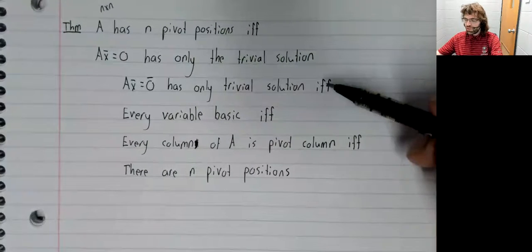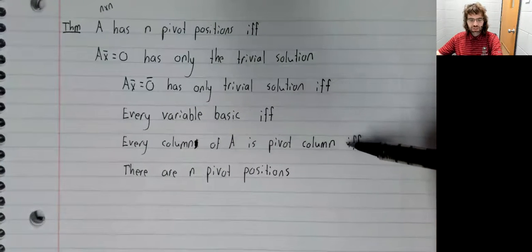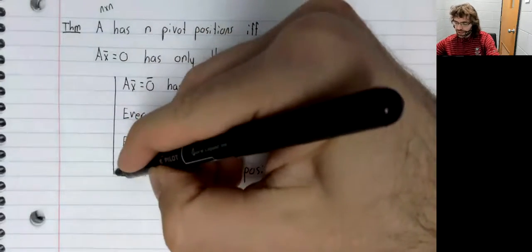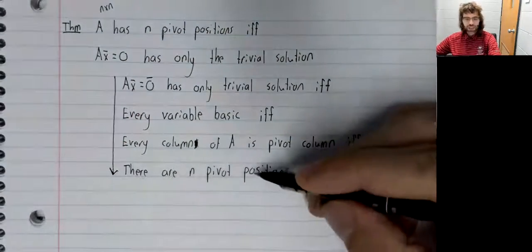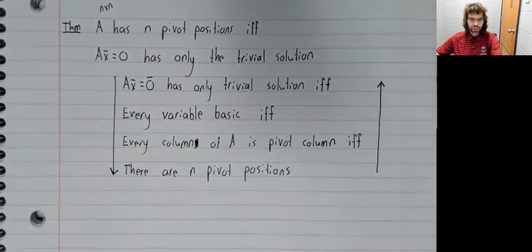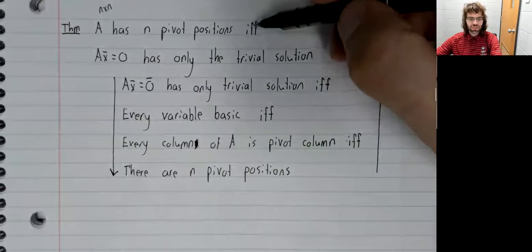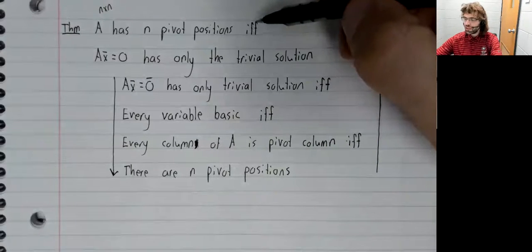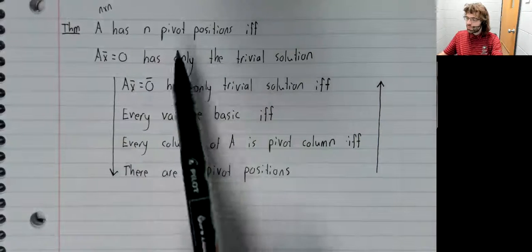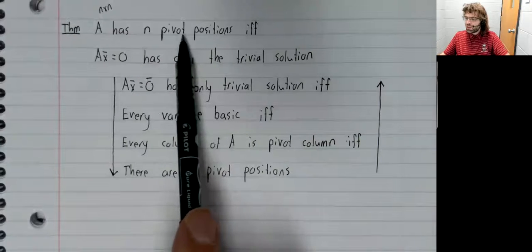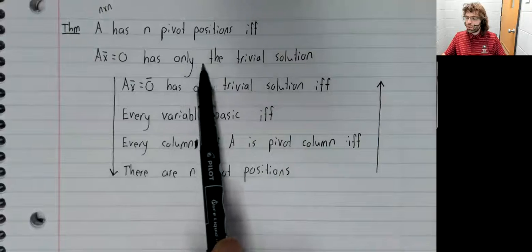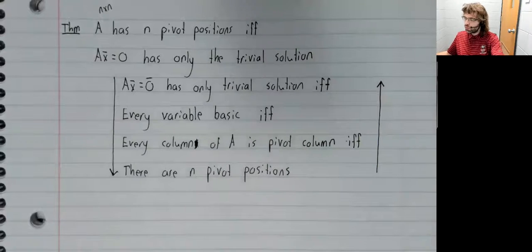So because each of these is an if and only if statement, we can start up here and get down to this, or we can start down here and go up to this. And we have proven this if and only if statement. So A having n pivot positions is equivalent to Ax equals zero only having the trivial solution.